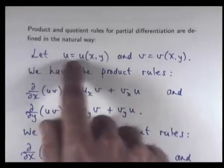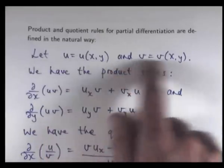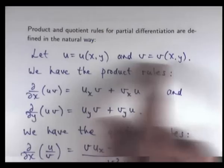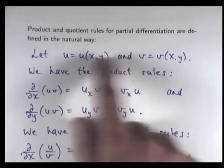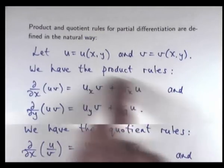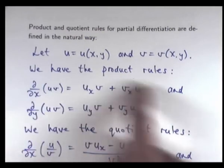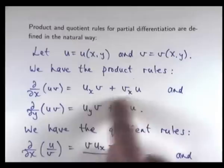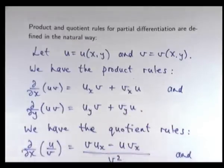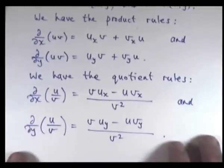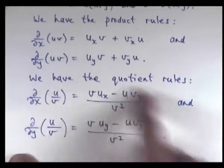So if we have two functions, u and v, both functions of two variables, then we have the following product rules — remember the subscripts are partial derivatives — and we also have quotient rules.